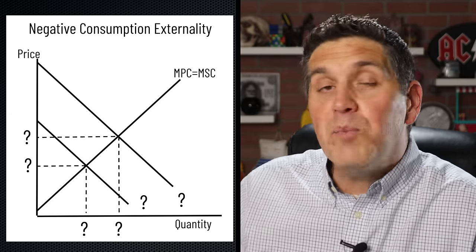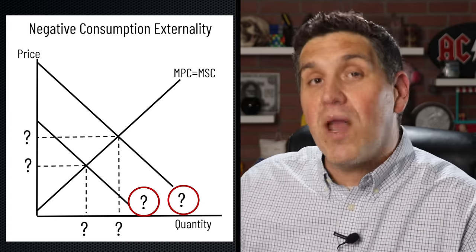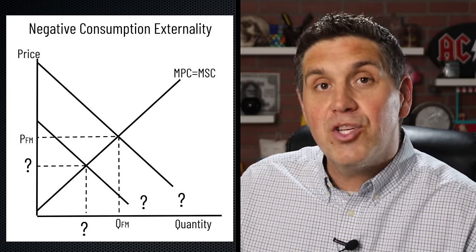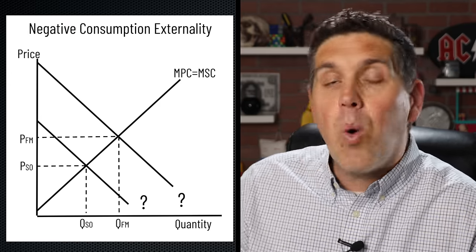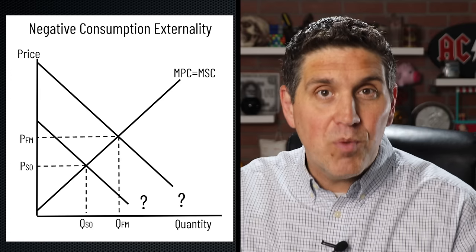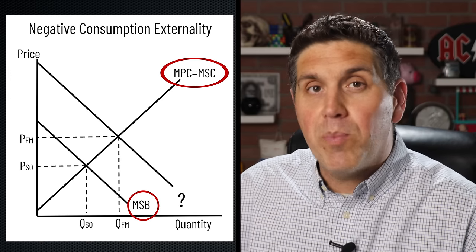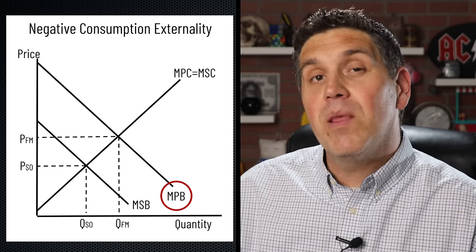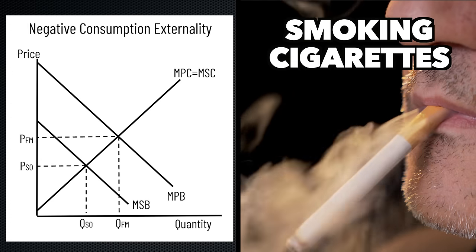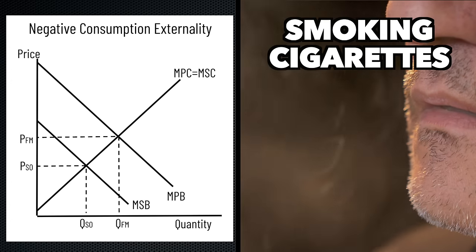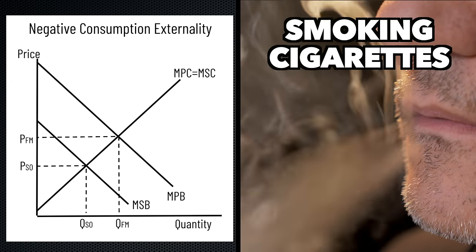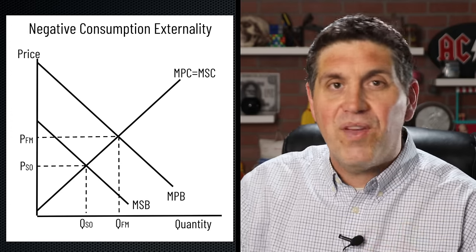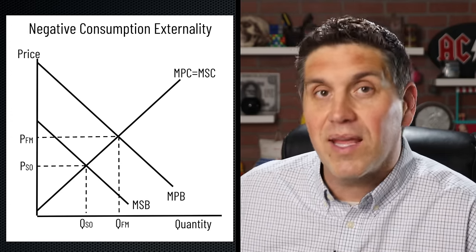Now let's draw a negative consumption externality. You know there's going to be two benefit curves and the quantity to the right is the free market quantity — we're producing too much with a negative externality. The other quantity must be the socially optimal, where the marginal social benefit hits the marginal social cost. That means the remaining curve must be the marginal private benefit. This is the correct graph for the negative externality from smoking cigarettes — people who smoke only factor in their private benefit, not recognizing the social benefit is lower because others will get sick.